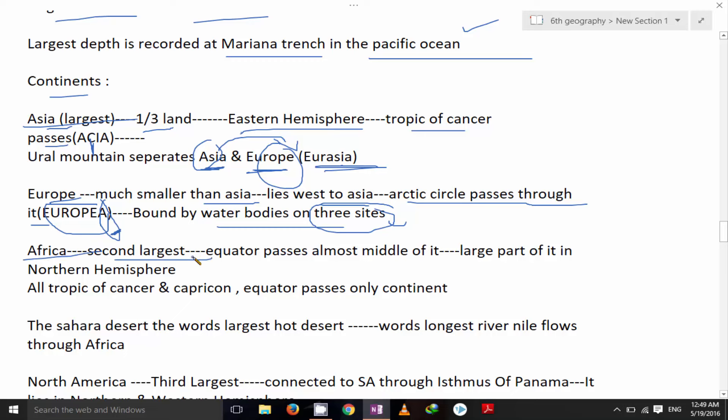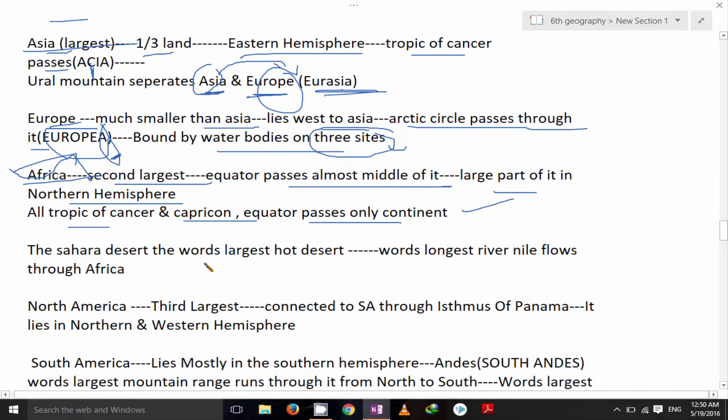Africa. It's the second largest continent. Equator passes almost middle of it. Large part of it in the northern hemisphere. Tropic of cancer, capricorn and equator passes through this continent, means three of them. The Sahara desert, the world's largest hot desert and world's longest river Nile flows through Africa. So Nile and Sahara, considered as NASA.